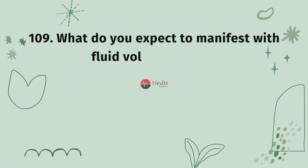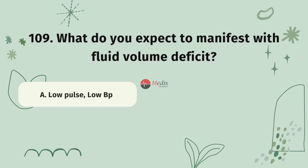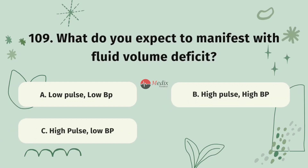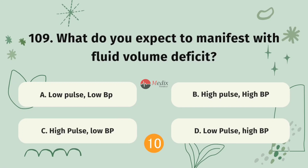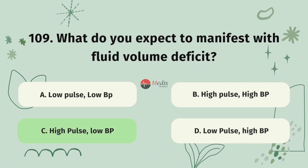Question 109. What do you expect to manifest with a fluid volume deficit? Option A, low pulse and low BP. Option B, high pulse and high BP. Option C, high pulse and low BP. Option D, low pulse and high BP. The correct answer is C.